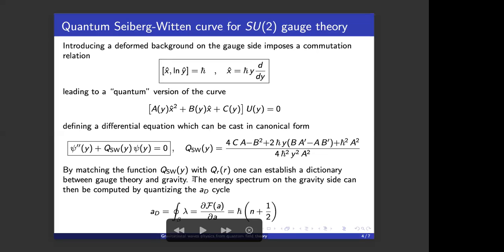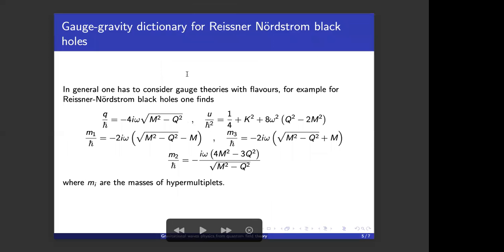So okay, here I present the dictionary between Reissner-Nordstrom black holes and SU(2) theory with flavor. Because in general, one has to consider gauge theories with flavors, in particular with three flavors. Capital M is the mass of the black hole, capital Q is the charge of the black hole, k squared is the separation constant appearing in the differential equation when we separate it, and m_1, m_2, and m_3 are the masses of the hypermultiplets. Omega is the frequency of the quasi-normal mode solution. Next slide, please.